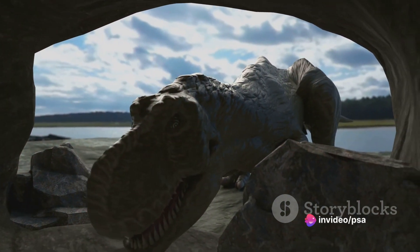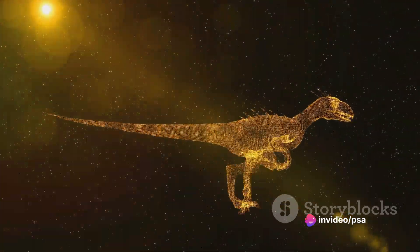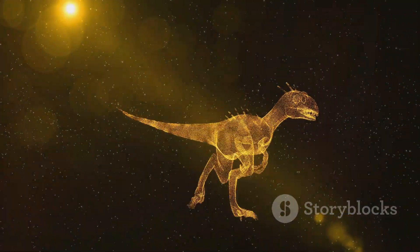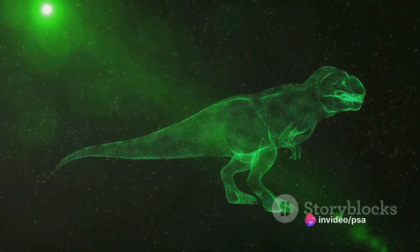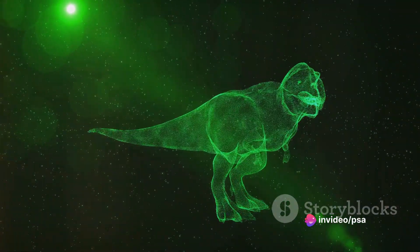The extinction of the dinosaurs wasn't a sudden event. It was a gradual process, exacerbated by the harsh conditions that followed the asteroid's impact. Their numbers dwindled, their strength waned, and one by one, the mighty dinosaurs fell, succumbing to the relentless onslaught of the new world order.